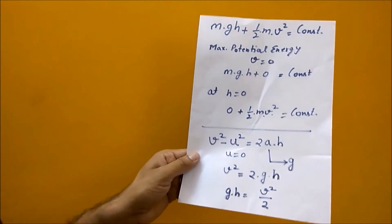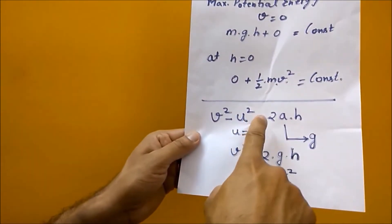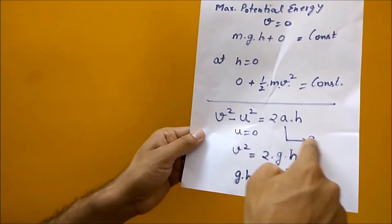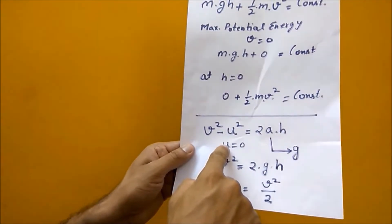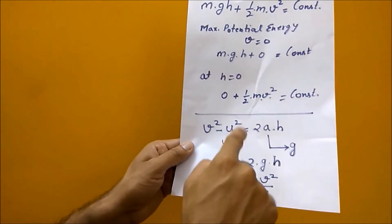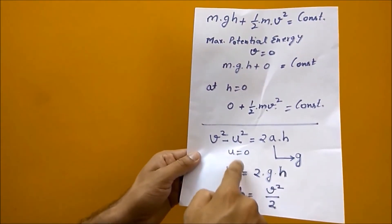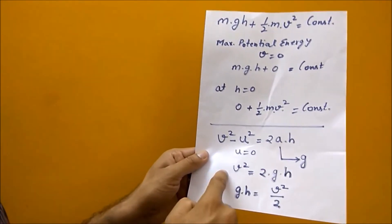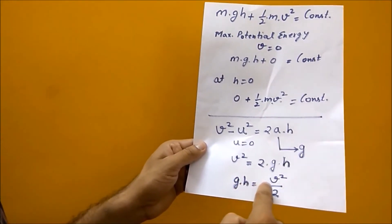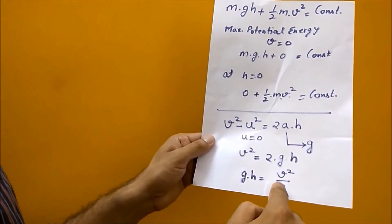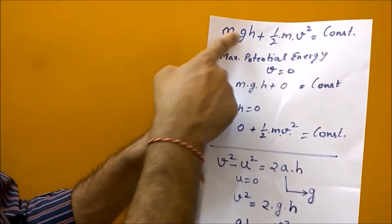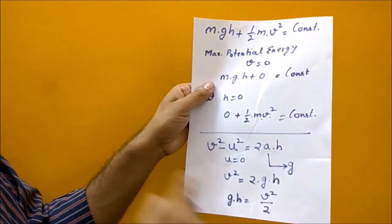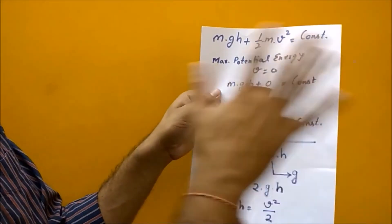We can verify this using the equation v² − u² = 2ah. Here acceleration is due to gravity g, and initial velocity u is zero, so v² = 2gh, which gives gh = v²/2. Substituting into the energy equation, mgh becomes m × (v²/2), which equals half mv squared. This confirms the relationship between potential and kinetic energy.